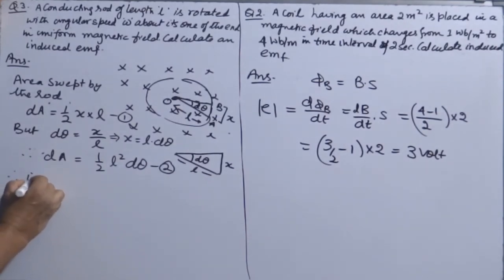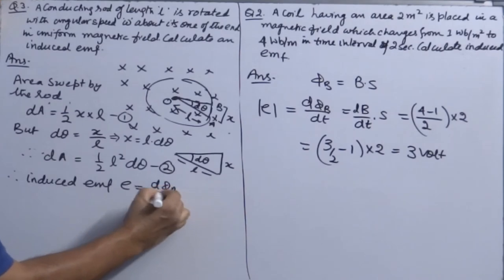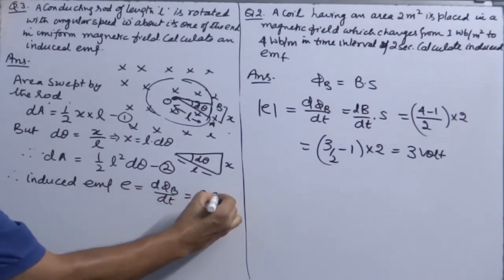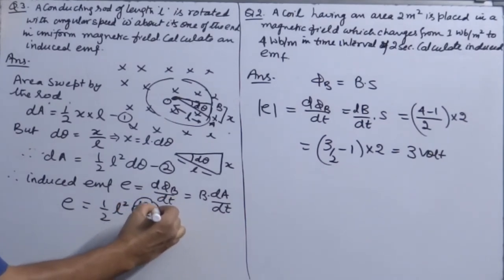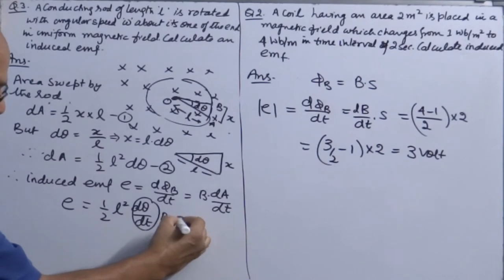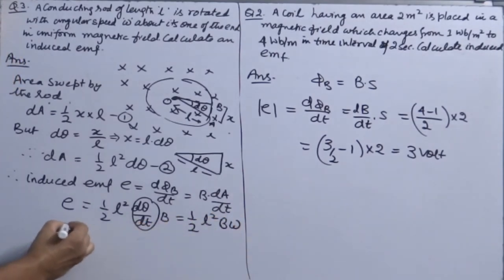Therefore induced EMF, E is equal to d phi B over dT. So it is B into dA over dT. So I have done two questions. In one question, magnetic field is changing with time. In another question, area is changing with time. So you can put it as E is equal to half L squared d theta over dT. And d theta over dT is omega. So half L squared B omega. So what is the answer? Half B L squared omega.